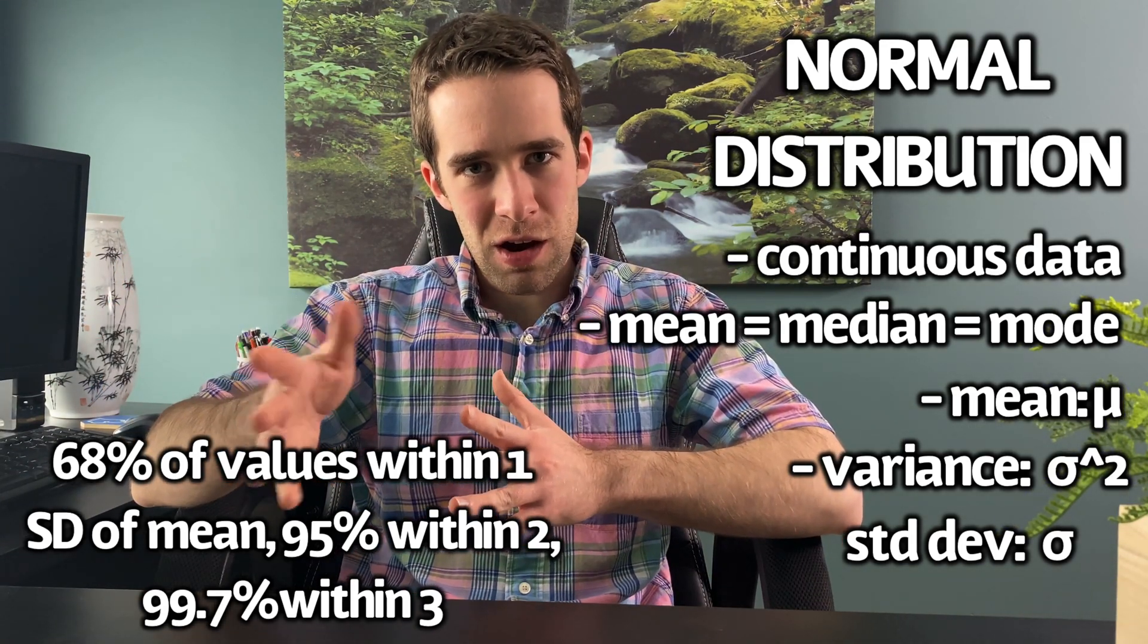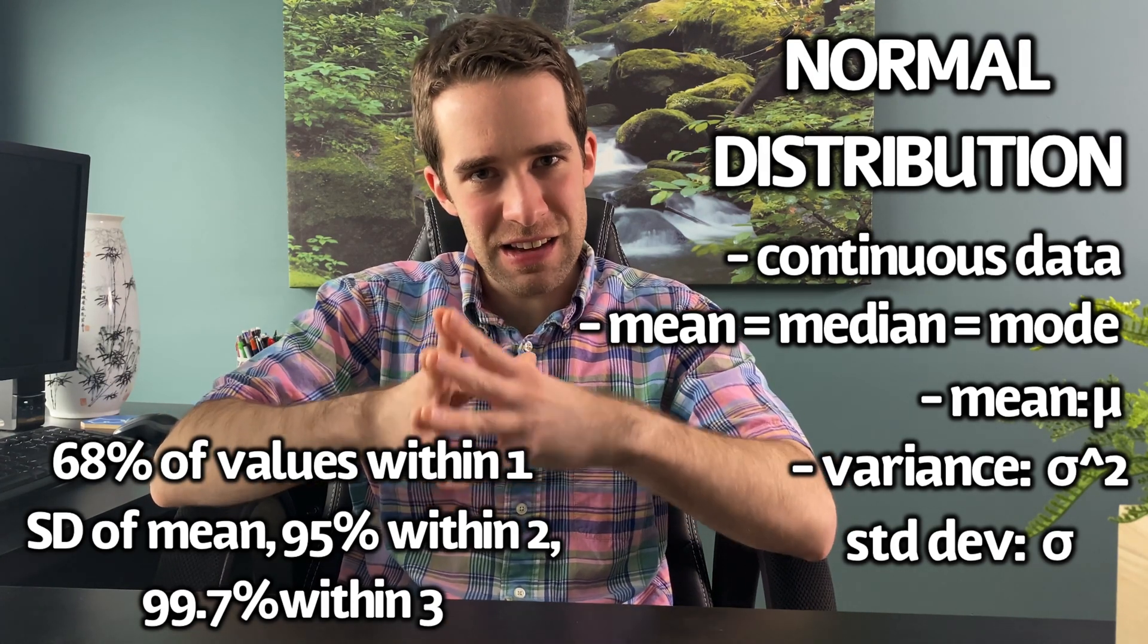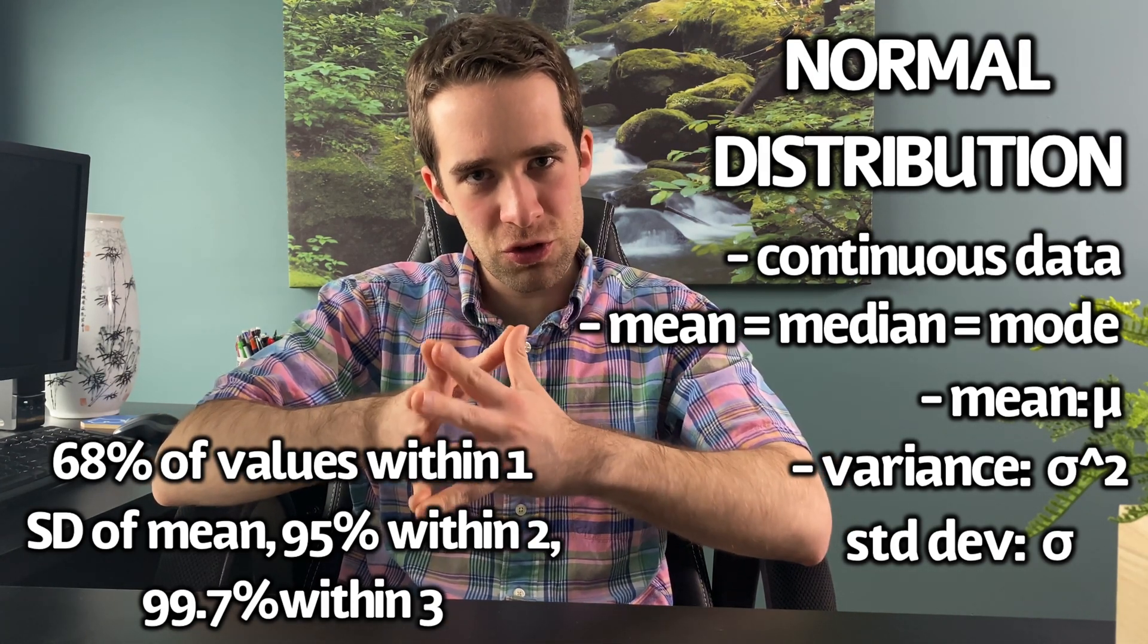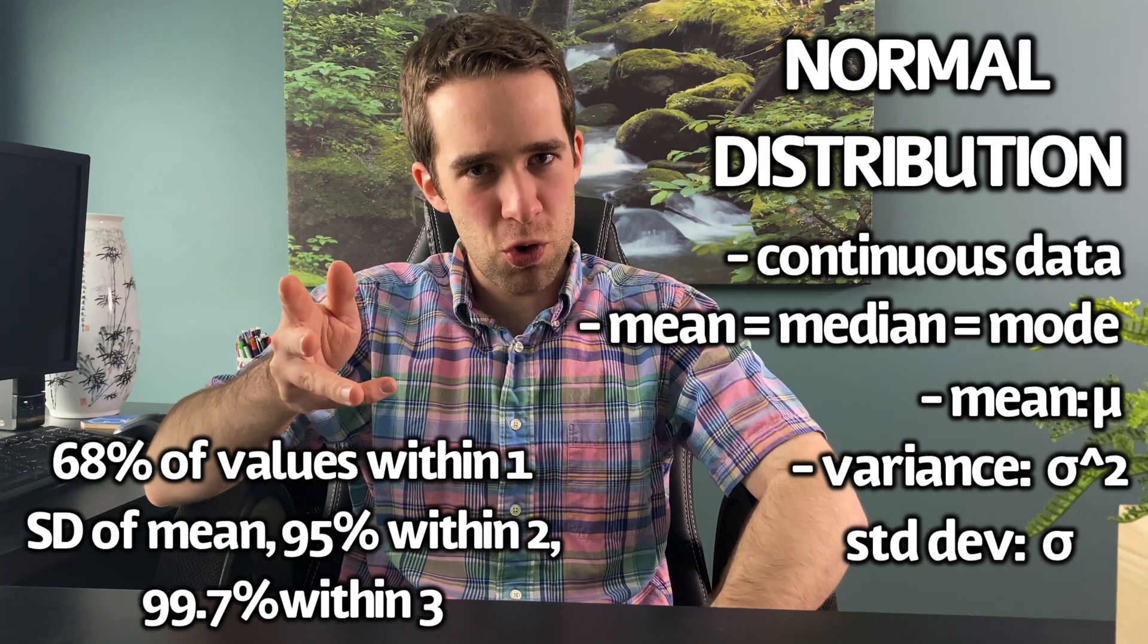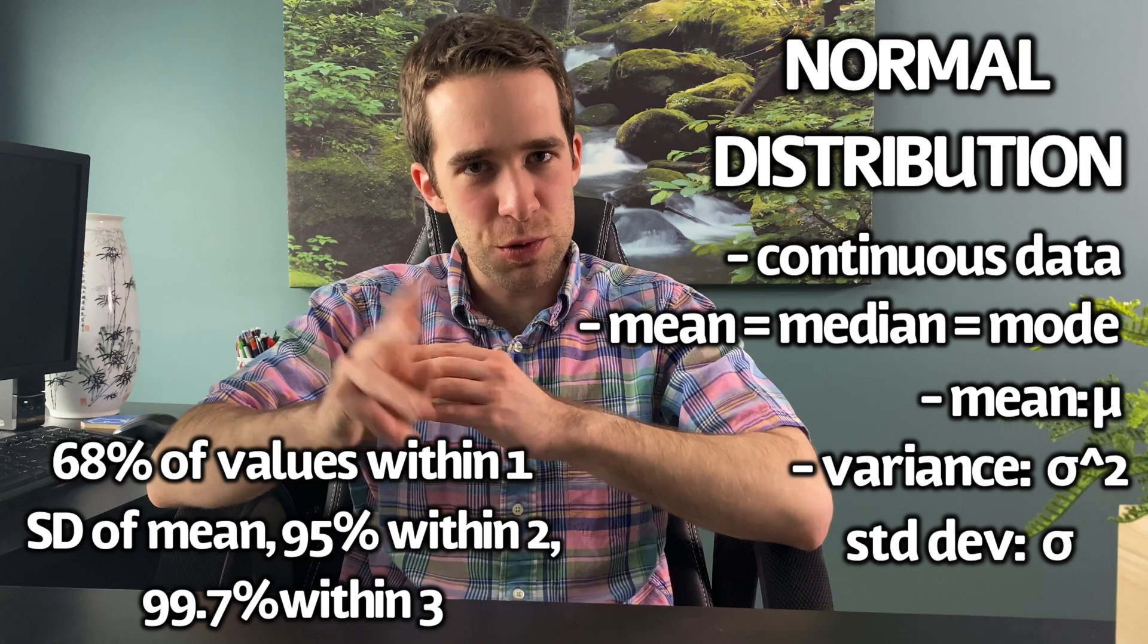We're going to work through a couple examples here, and you'll see how simple and easy it is to use the normal distribution. To do it you need a normal probability table. Also if you know how to program in R or Python you can use that instead.